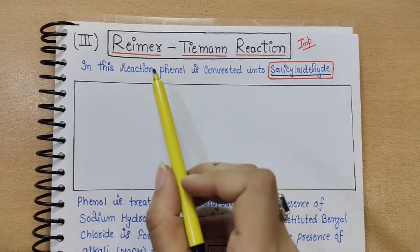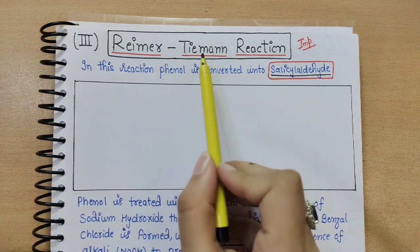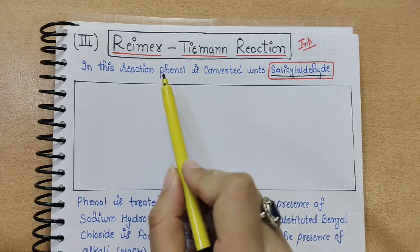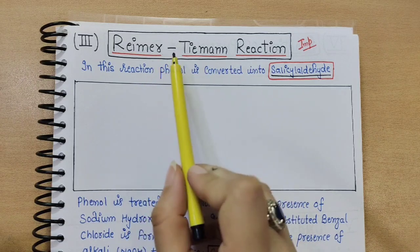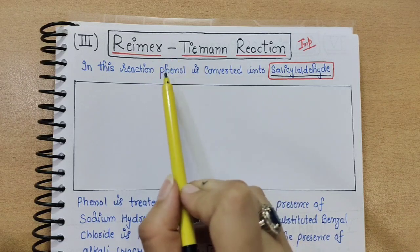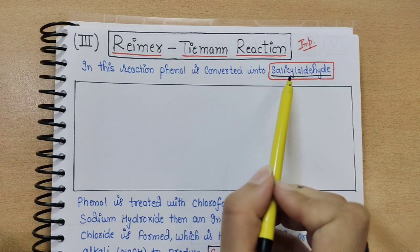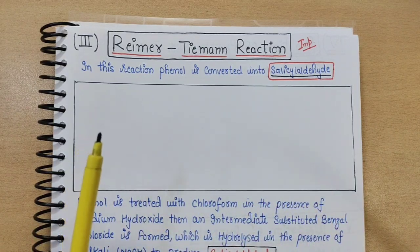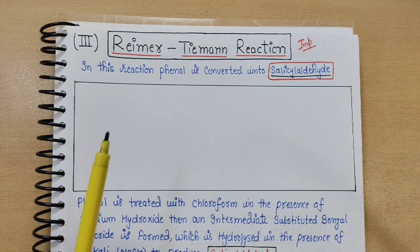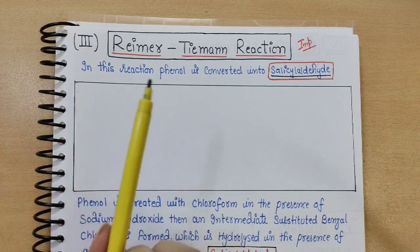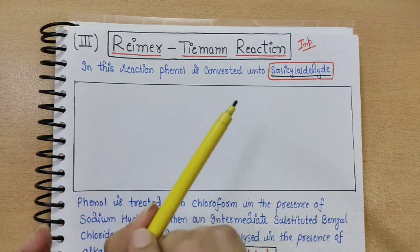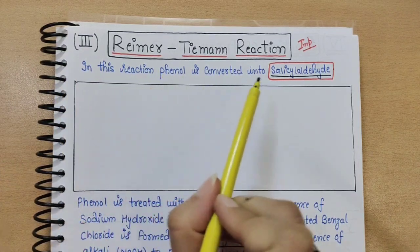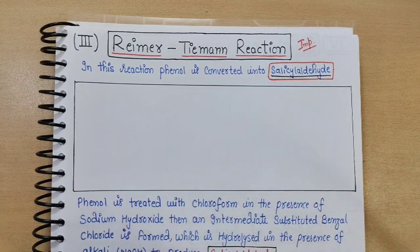Hello students. Today we will do the Reimer-Tiemann reaction, which is a very important reaction of phenol. In this reaction, phenol is converted into salicylaldehyde. In the previous lecture, in the case of the Kolbe reaction, phenol was converting into salicylic acid, but here phenol is converting into salicylaldehyde.